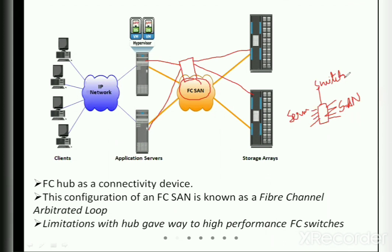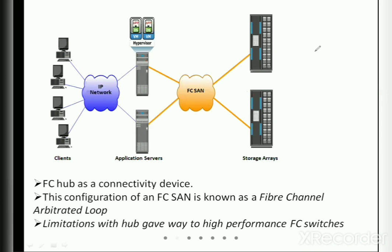With the switch, the data connectivity was very good, the performance improved, and it was scalable — you might have seen 24-port switches or more, where you can connect more storage arrays. This is how the evolution of the Storage Area Network took place, by moving from hub-based FC-AL to switch-based fabric.